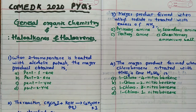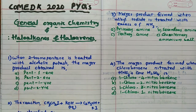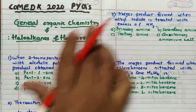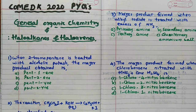Namaste students, welcome to RH Chemistry. In this COMETK 2020 PYQ series — previous year questions series — I am going to discuss General Organic Chemistry and Haloalkanes and Haloarenes. Most of you are asking doubts on WhatsApp and in the comment box about what the syllabus of COMETK should be.